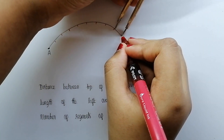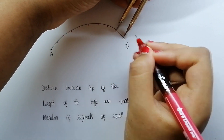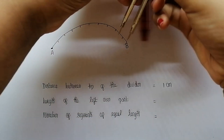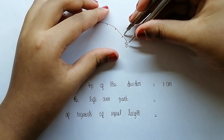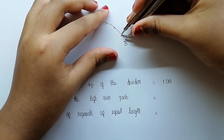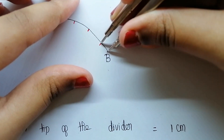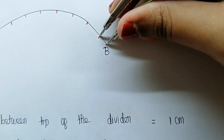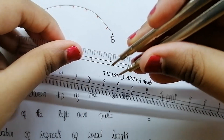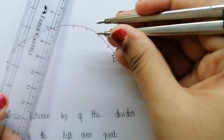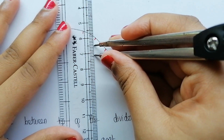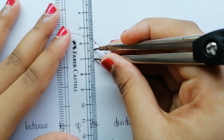The leftover part of the curved line is measured separately because it is less than the distance between the tips of the divider. The length of the leftover part is equal to 0.6 centimeter.